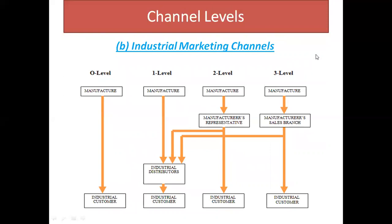Now considering the industrial marketing channel, it is to some extent related to the previous one. At zero level: manufacturer to industrial customer. One level: manufacturer to industrial distributor to industrial customer. At level two, the manufacturer goes to an industrial representative, from which there are two branches — one goes directly to the industrial customer and another goes to the industrial distributor, then to the industrial customer. At three level: manufacturer to manufacturers' sales branch, which continues to the industrial customer, and another branch goes to the industrial distributor, then to the industrial customer.